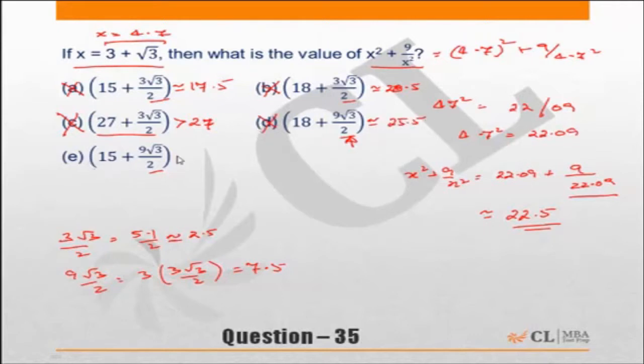So choice E should be the answer but let's check it out. 15 plus 7.5, approximately 22.5. Correct answer. Choice E.